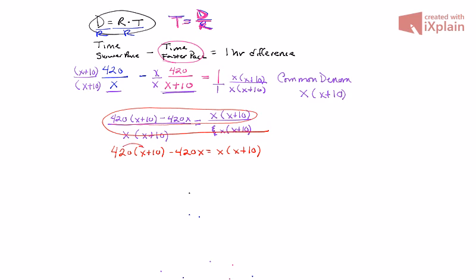You would go ahead and distribute that 420. So you have 420x plus 4200 minus 420x equals, we're going to distribute that x and we get x squared plus 10x. Hopefully what you're seeing here is I have additive inverses. These are going to go away. This leaves us with 4200 equals x squared plus 10x. I'm going to clear one side of this equation, so now I have 0 equals x squared plus 10x minus 4200.